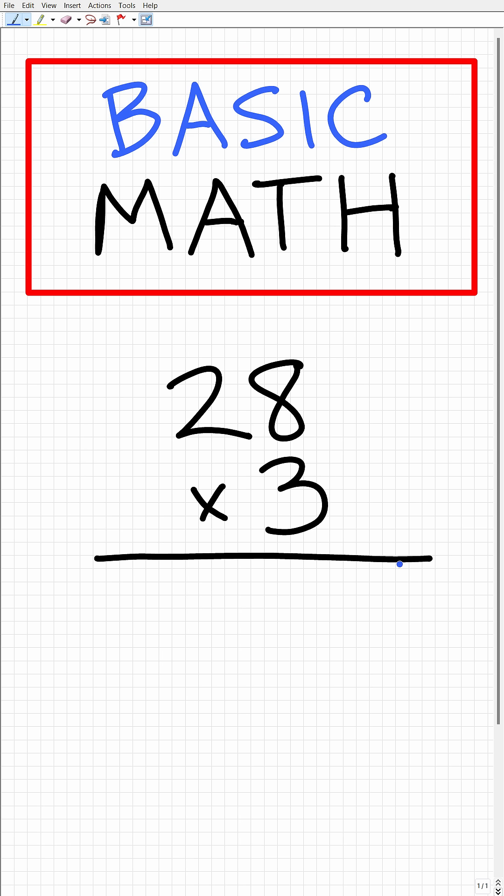But you can also use it in simple arithmetic like this. So we can write this problem this way, three times 28. Now the distributive property says that we can take this number right here and write it in terms of a sum and difference.